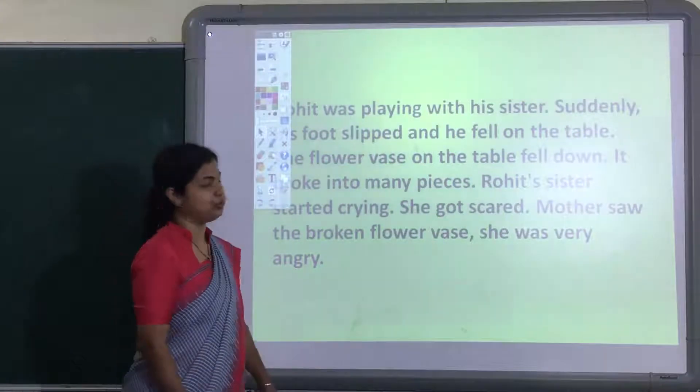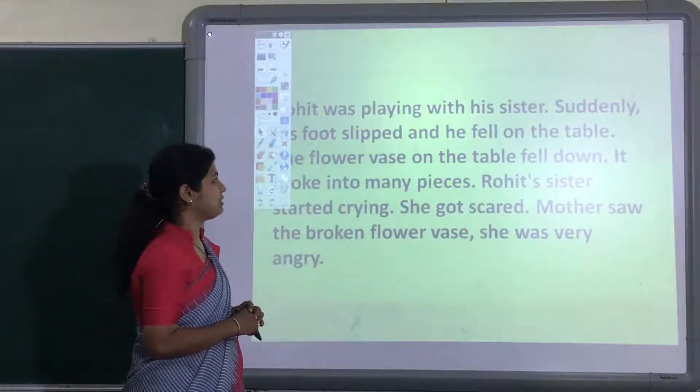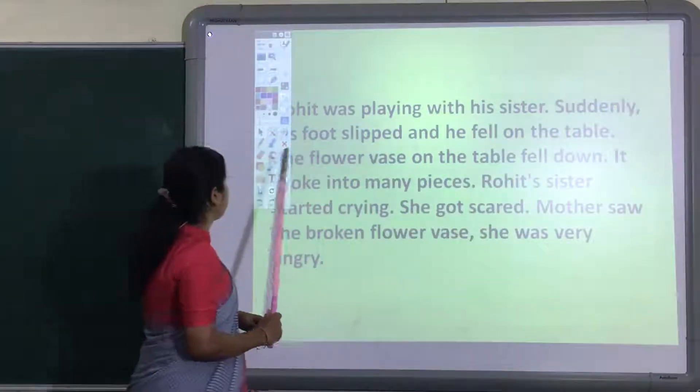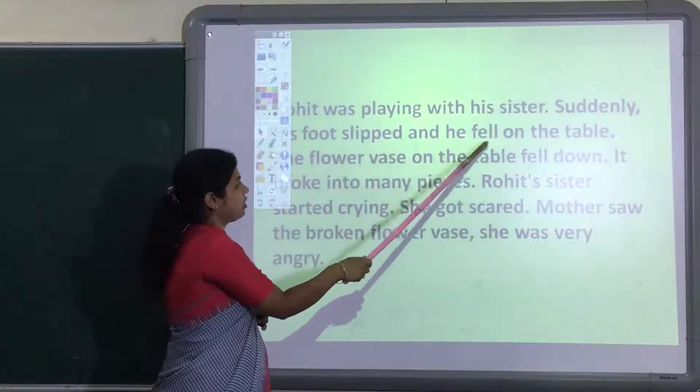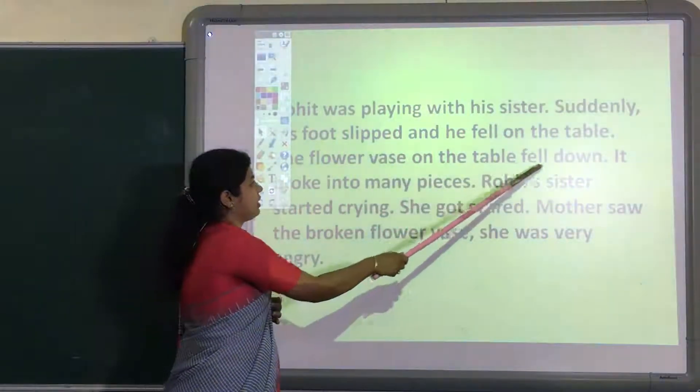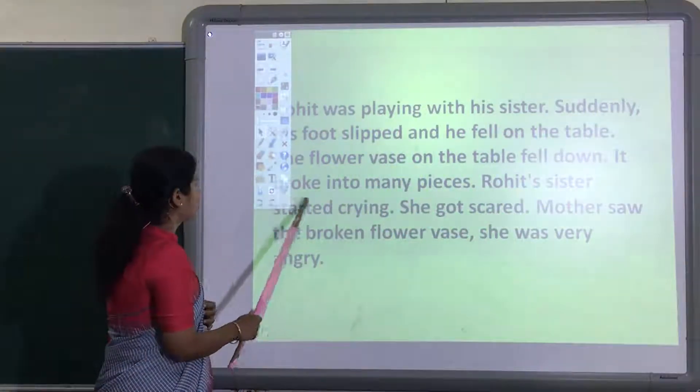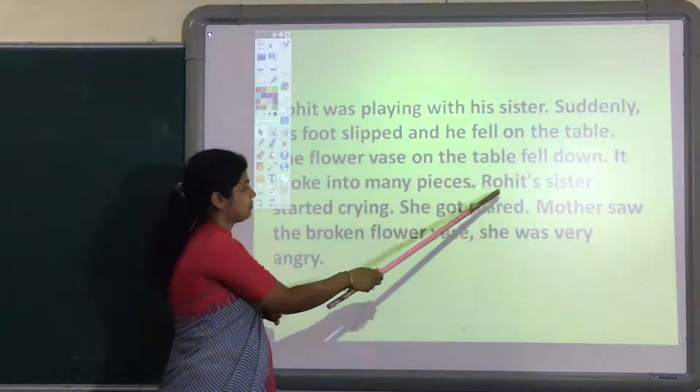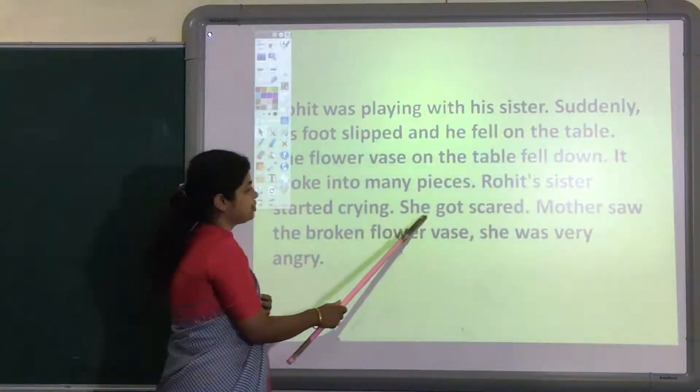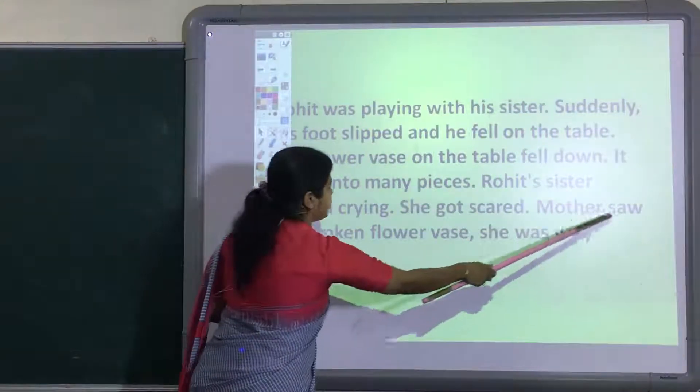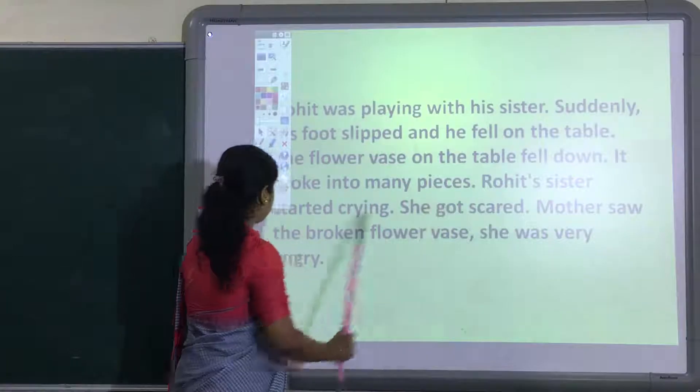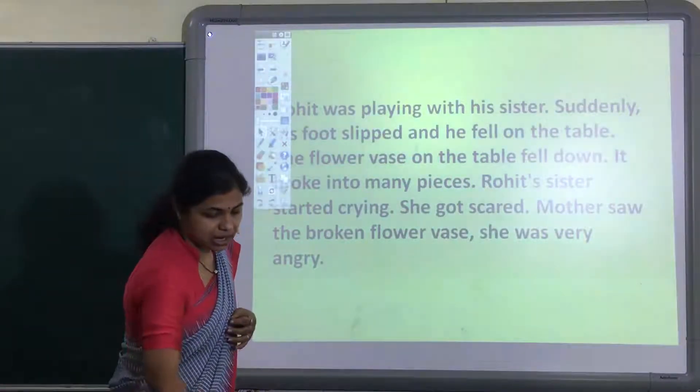I will read this paragraph for you. Rohit was playing with his sister. Suddenly, his foot slipped and he fell on the table. The flower vase on the table fell down. It broke into many pieces. Rohit's sister started crying. She got scared. Mother saw the broken flower vase. She was very angry.